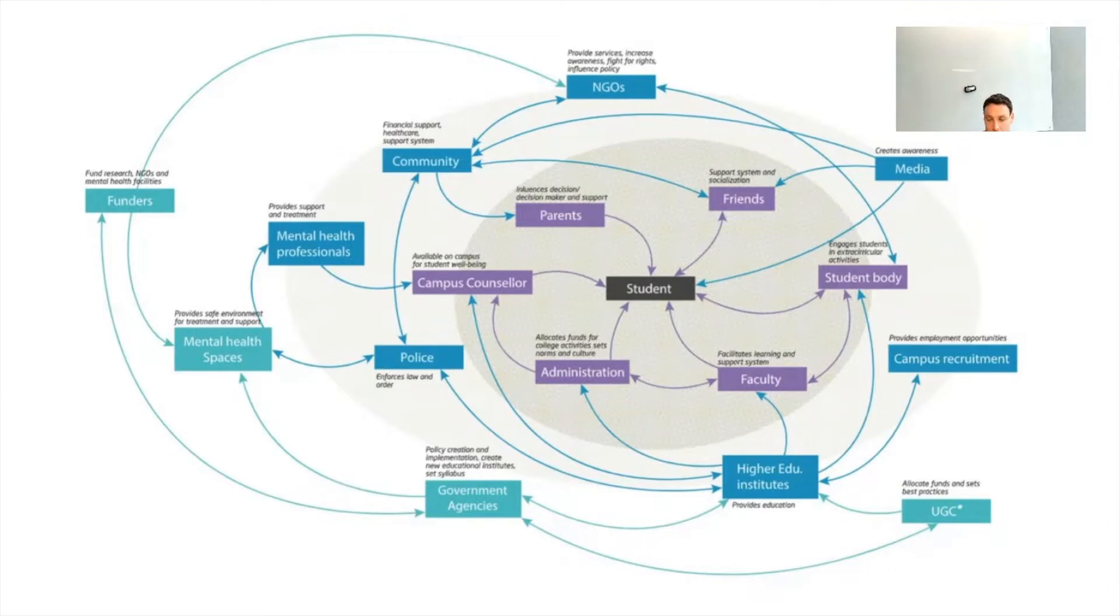They're focusing on students and all the elements that are affecting the students' level of mental well-being and depression. Students are in the center, and around that they've put other elements - the parents, friends, student body, faculty, and so forth. Around those they put more elements, kind of secondary factors affecting those primary ones - community, NGOs, media, and so forth. Then there's the third circle with government agencies, and so on.